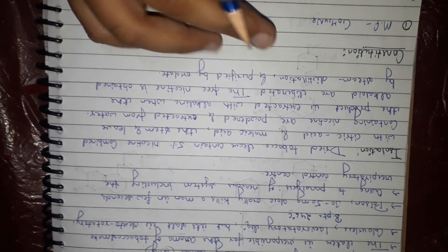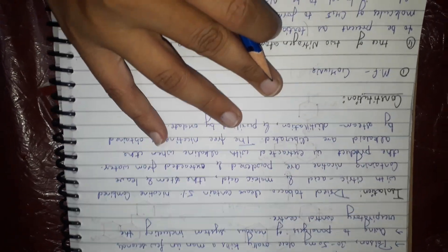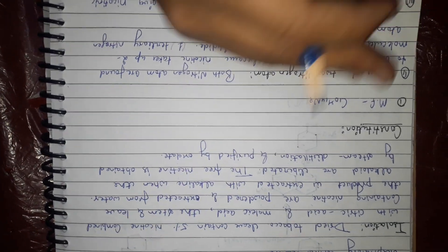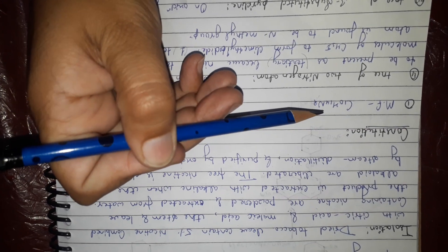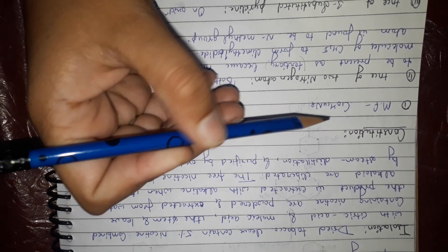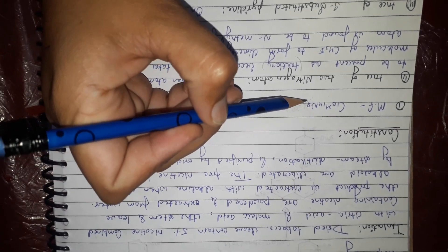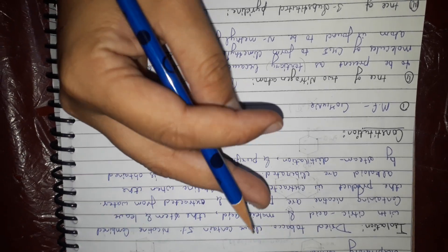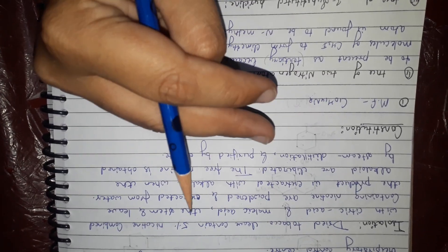Now we have to study the constitution of nicotine. First, the molecular formula which is C10H14N2, meaning the structure consists of two nitrogen atoms mainly. This is the structure and it consists of two nitrogen atoms.